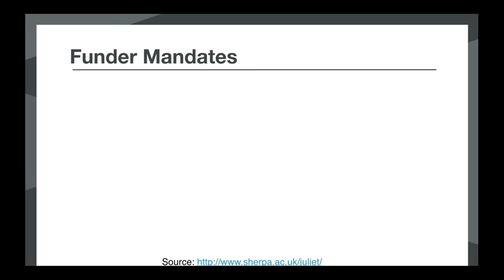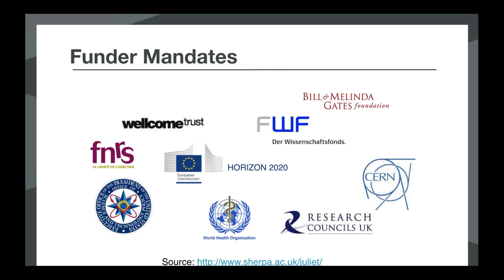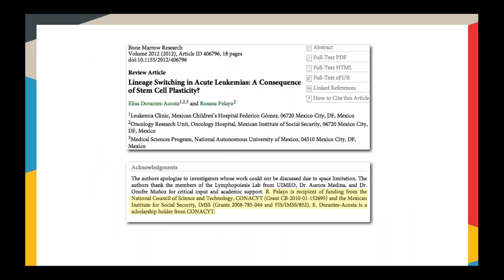Funders are increasingly requiring researchers to make publications that result from their funding openly available. The obvious mandates that most people have heard about are the US Federal Agencies, the European Commission's Horizon 2020 Funding Programme, and here in the UK the Research Councils and Higher Education Funding Body. But there's a growing group all the time who are updating their policies and stipulating OA publication. The Crossref Funding Data Project is about pulling that information out of the article and making it a standard part of article metadata so that it can be collated and analysed.